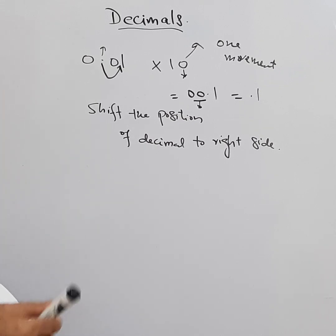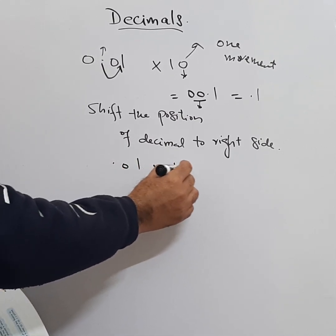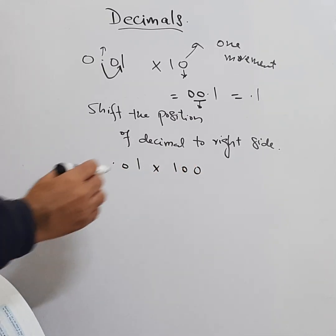If we do the similar question and we need to multiply it with 100, so two zeros means we need to give two movements to the decimal.